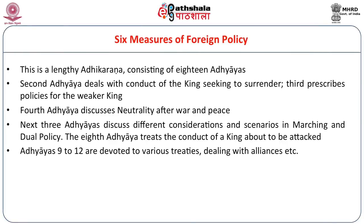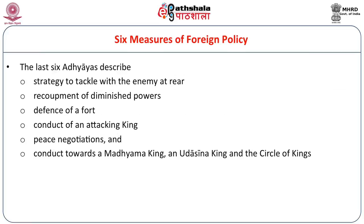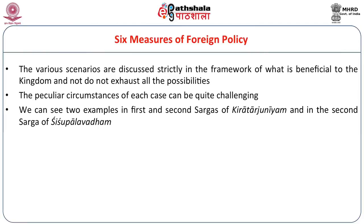There are 18 Adhyayas here in the six measures of foreign policy. The second adhyaya deals with conduct of kings seeking to surrender; the third prescribes policies for the weaker king; the fourth discusses neutrality after war and peace; the next three discuss different scenarios on marching and dual policy; the eighth treats the conduct of a king about to be attacked. Adhyayas nine to twelve are devoted to various treaties — how to get into treaties, how to deal with alliances, etc. The last six adhyayas describe strategy to tackle the enemy at the rear, recoupment of diminished powers, defense of a fort, conduct of an attacking king, peace negotiations, and conduct towards a Madhyama or Udasina king.